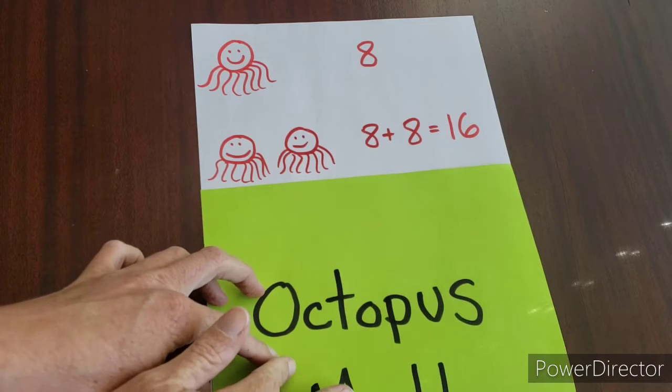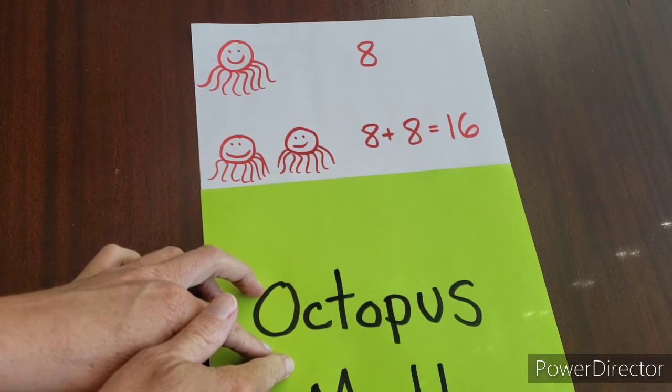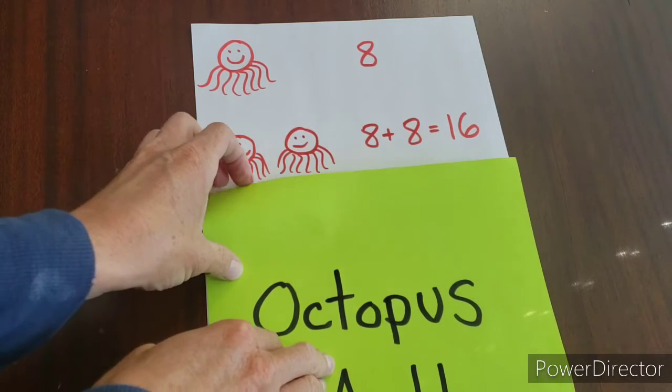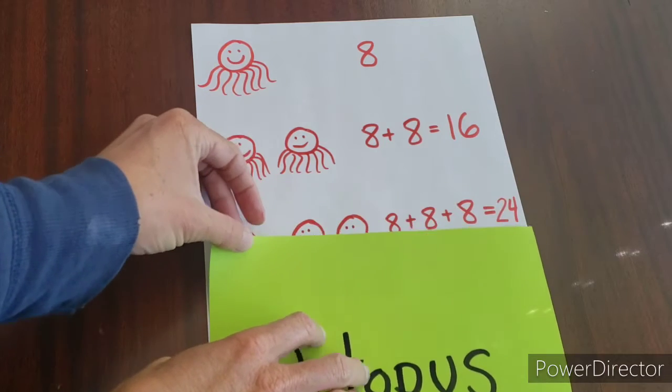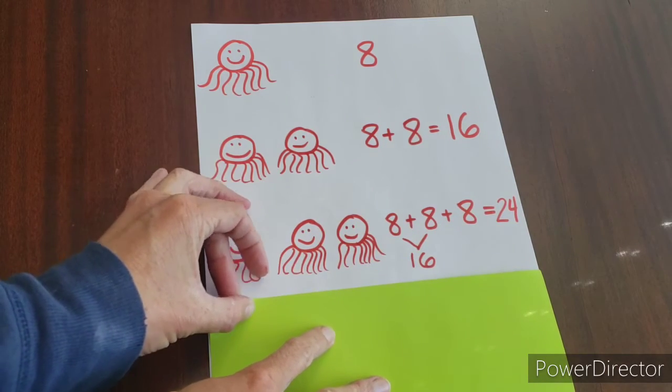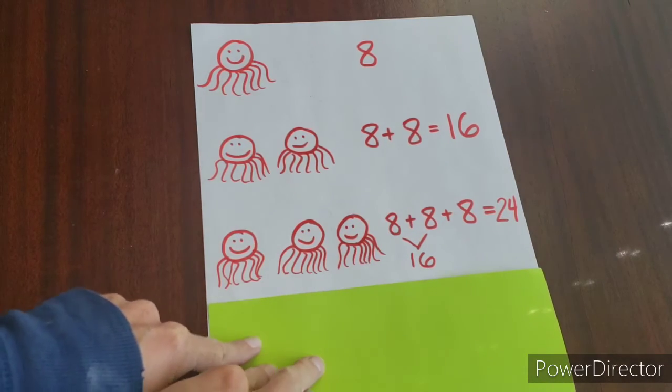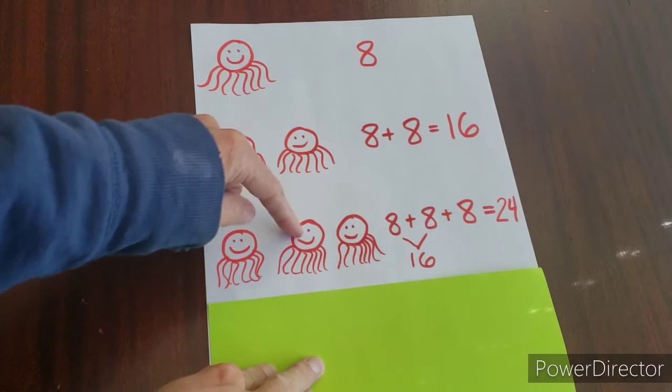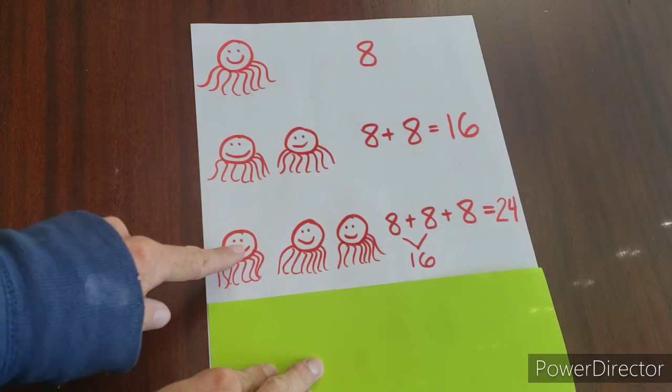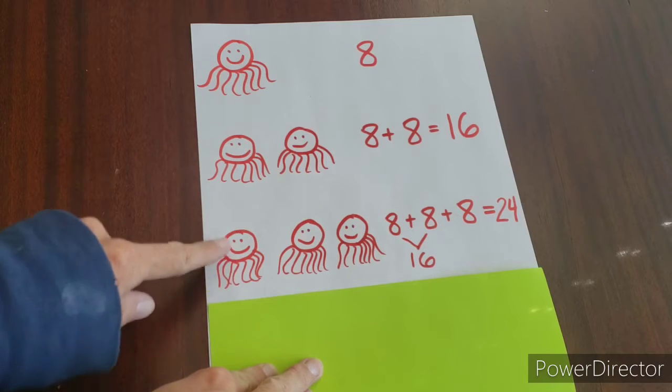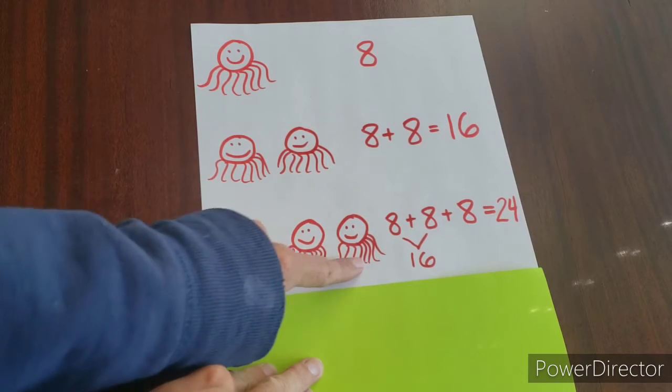So now the next thing that gets a little bit more tricky is what is eight plus eight plus eight? If we have three octopi, okay? So if you can draw out the octopus, then you would see that three octopuses, you can draw three octopi, have eight legs.